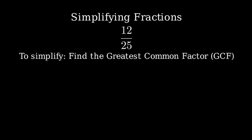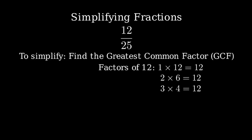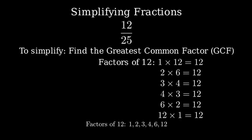Let's start by finding all the factors of 12. 1 × 12 = 12, 2 × 6 = 12, 3 × 4 = 12, 4 × 3 = 12, 6 × 2 = 12, and 12 × 1 = 12. So the factors of 12 are 1, 2, 3, 4, 6, and 12.